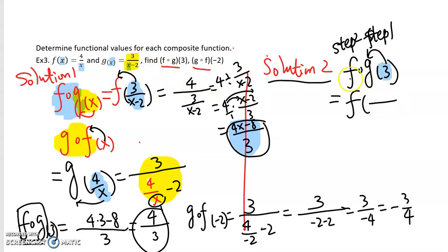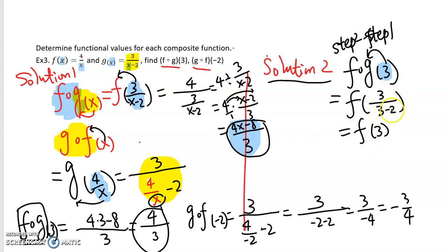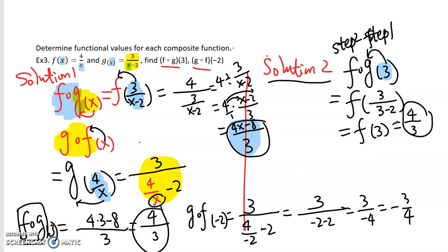In the g function, the top is 3 and the bottom is x minus 2, so that variable x is replaced by 3. That simplifies to 3 over (3 minus 2) = 3 over 1 = 3. Now in the second step, we plug 3 into the f function, which gives us 4 over 3. As you can see, we get the same answer. I think the second solution is actually faster than the first.